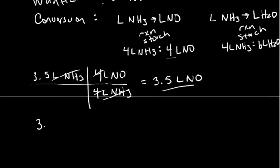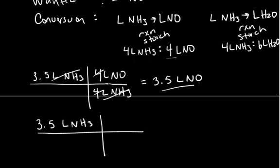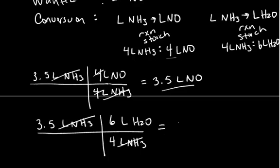For the water vapor, it's a similar case. Starting with 3.5 liters of ammonia and excess oxygen, our conversion factor is: for every four liters of ammonia used, we create six liters of water vapor. The liters of ammonia unit cancels, leaving 3.5 times 6 divided by 4, which equals about 5.3 liters of water vapor formed.